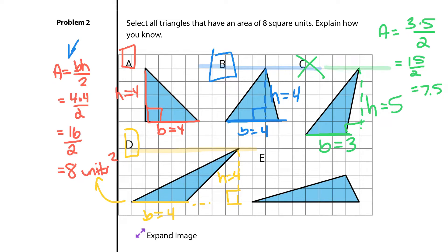If we look at E, I have a base here. And that base is 1, 2, 3, 4, 5, 6, 7, 8. And then, again, drawing in a parallel line, my height is 2.